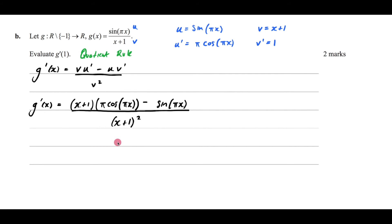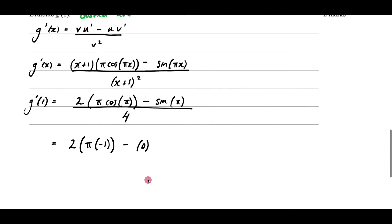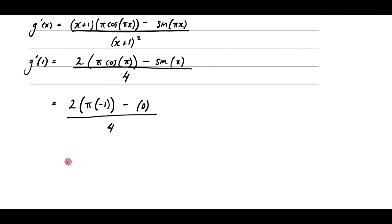Many people forget to now evaluate at x equals 1. Substituting x equals 1: the numerator becomes 2 times π cos(π) minus sine(π), and the denominator is (1 plus 1) squared equals 4. Since cos(π) equals negative 1 and sine(π) equals 0, the numerator is 2 times (negative π) minus 0, giving negative 2π. Dividing by 4 and simplifying gives the final answer of negative π over 2.